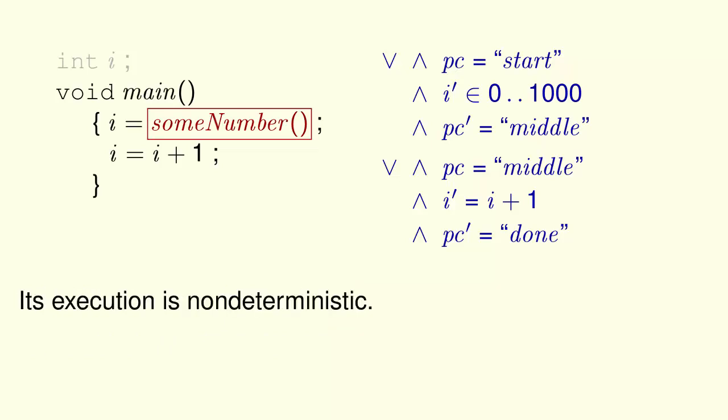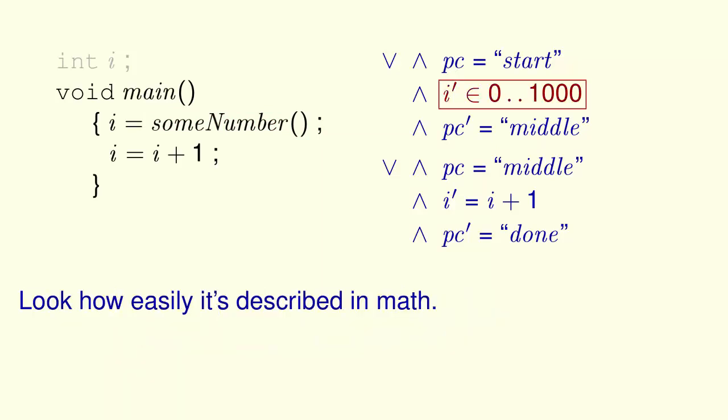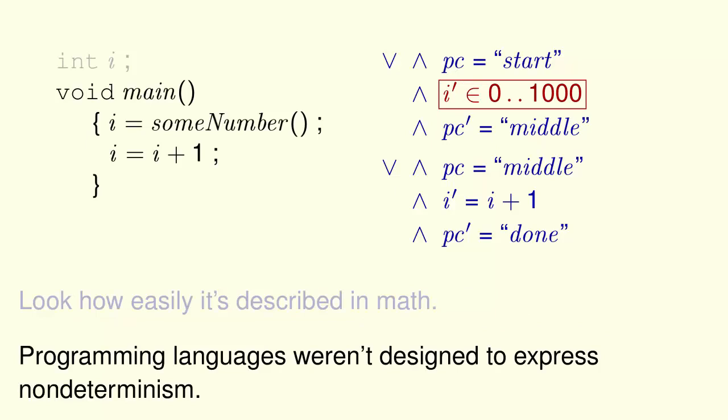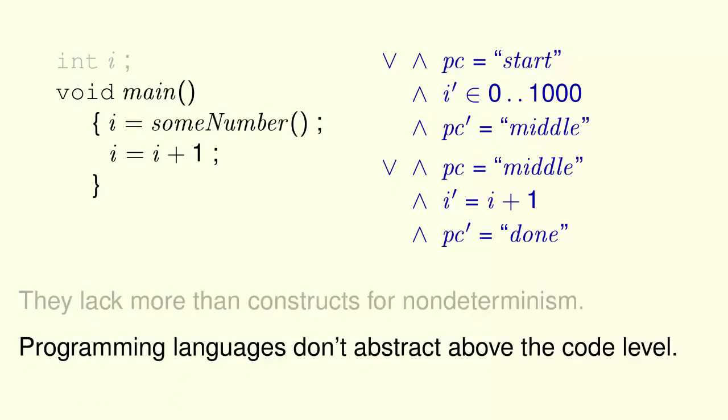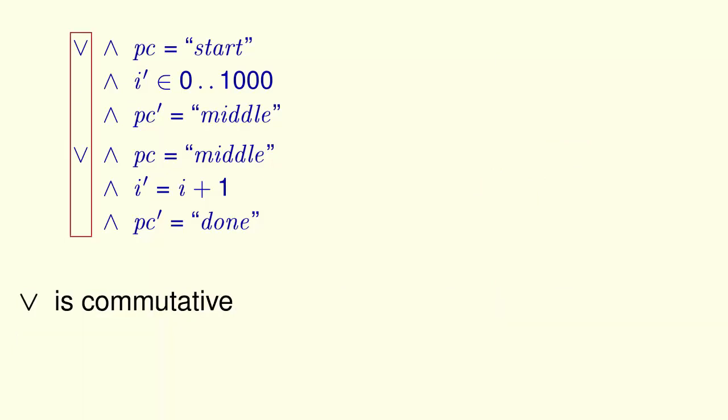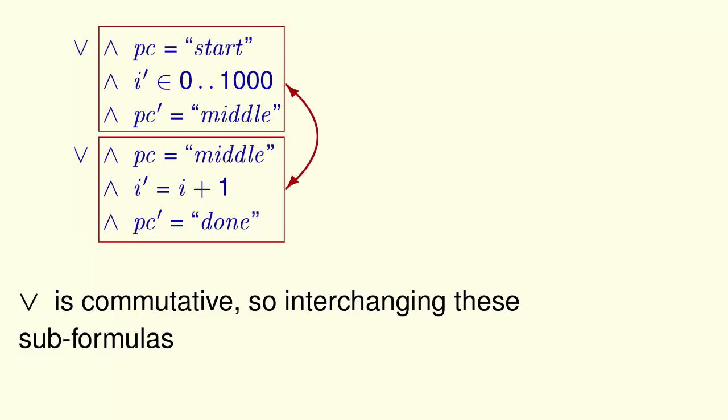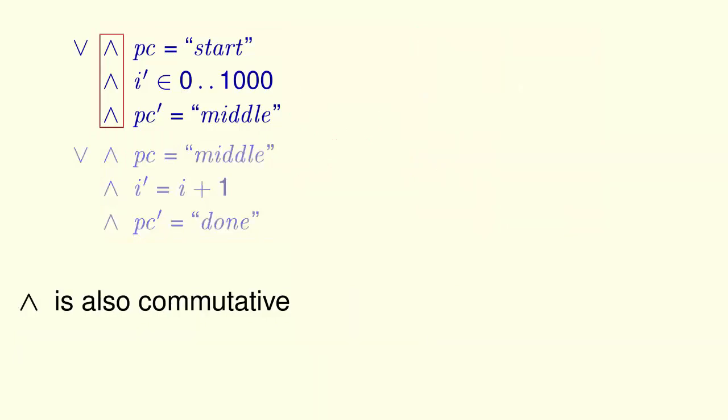What about some number? Its execution is non-deterministic. We need non-determinism like this to describe systems because we can't predict in what order things happen. Look how easily it's described in math. Commonly used programming languages were not designed to express non-determinism. Programming languages lack much more than constructs for non-determinism. They don't let you abstract above the code level. It's important to remember that this is a formula, not a sequence of commands. Or is commutative. So interchanging these sub-formulas yields an equivalent formula, and is also commutative.